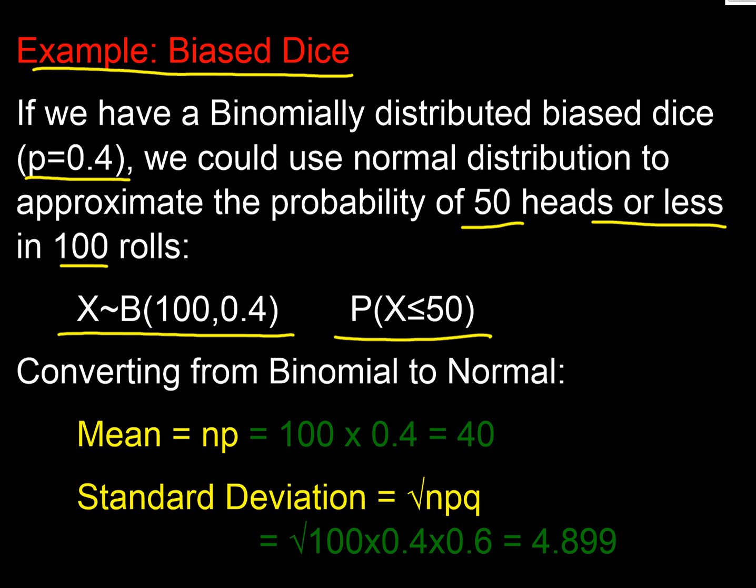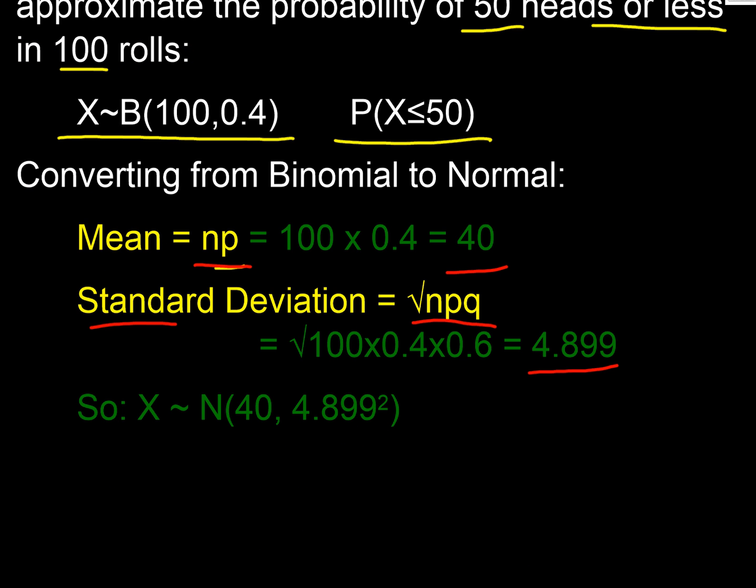If we're going to convert it into a normal, we need a mean and standard deviation to put into our normal. The mean of a binomial is NP, so in this case that'd be 40. The standard deviation of a binomial is the square root of NPQ, so in this case that'll be 4.899. And we're going to feed those into our normal. So our mean is going to be 40 and our standard deviation is going to be 4.899.